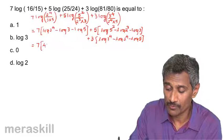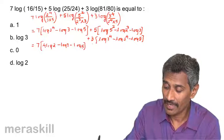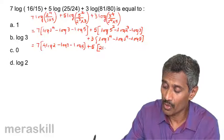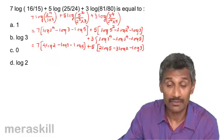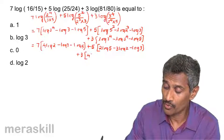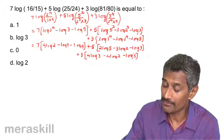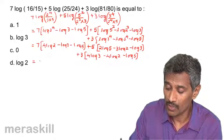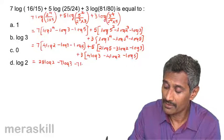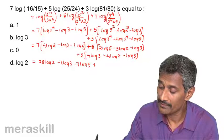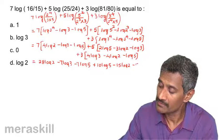Using the power rule to bring indices down as coefficients, this becomes 7(4 log 2 minus log 3 minus log 5) plus 5(2 log 5 minus 3 log 2 minus log 3) plus 3(4 log 3 minus 4 log 2 minus log 5). Expanding the brackets: the first bracket gives 28 log 2 minus 7 log 3 minus 7 log 5; the second gives 10 log 5 minus 15 log 2 minus 5 log 3.